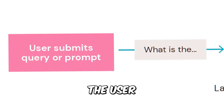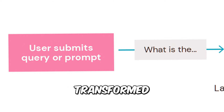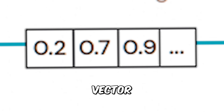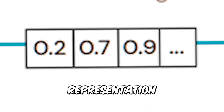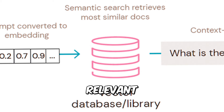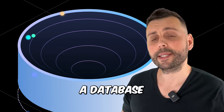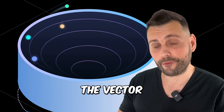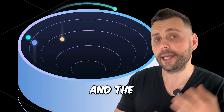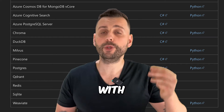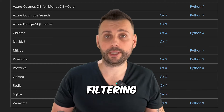How does RAG work? The user submits a query. This query is transformed into an embedding, which is simply a high-dimensional vector. This vector representation is then used to search for relevant information in a vector database — a database that stores both the vector embeddings and the actual data objects, allowing for vector searches with advanced filtering.